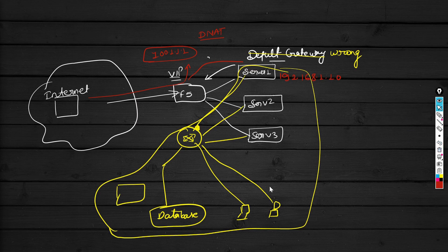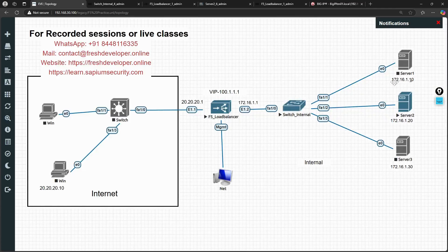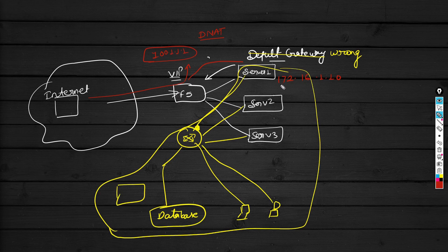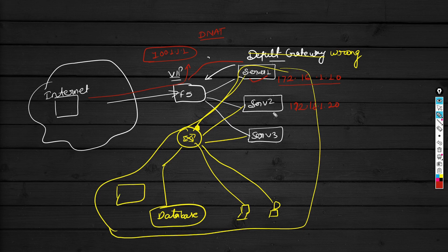In our scenario, the backend server IP is 172.16.1.10. The destination IP address changes from 100.1.1.1 to 172.16.1.10 and the request goes to server 1. Similarly, if the destination IP changes to 172.16.1.20 it goes to server 2. That is how the F5 distributes requests to each backend server via destination NAT.